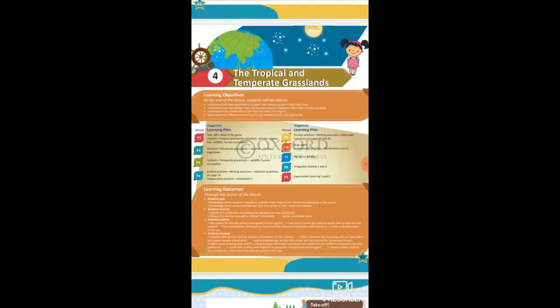Good morning students. Today's topic is tropical and temperate grasslands. There are different kinds of natural regions on the earth. Each region is unique — that is climate, soil, flora and fauna. Regions that are at similar latitudes have quite identical features.